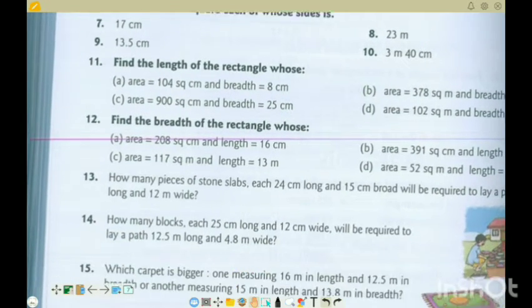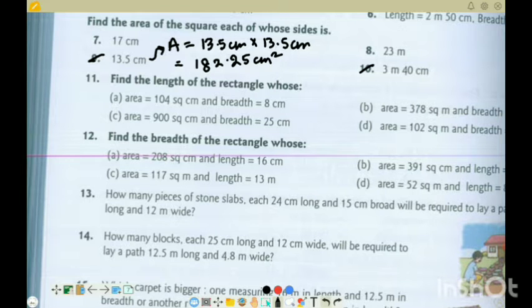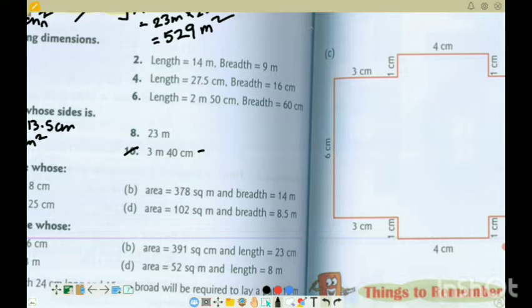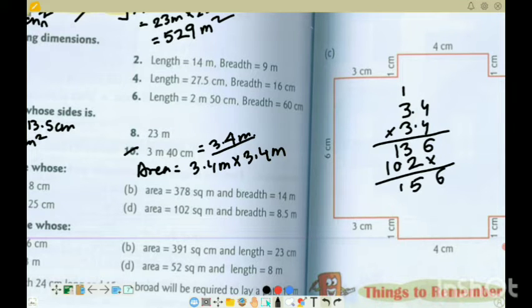Question 9: we have 13.5 centimeter. Area is equal to 13.5 centimeter into 13.5 centimeter. 13.5 into 13.5 equals 182.25 centimeter square. Question 10: 3 meter 40 centimeter, which is 3.4 meter. Area is equal to 3.4 meter into 3.4 meter. 3.4 into 3.4: 4 times 4 is 16, 4 times 3 is 12 and 1 is 13, 4 into 3 is 12 carry 1, 3 times 3 is 9 and 1 is 10. 6, 4, 5, 1, 1. Two decimal places gives 11.56 meter square. This is the area.